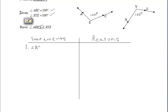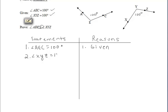The first thing that we know is that angle AEC is 100 degrees. How do we know that? We know that because it was given to us in the given information, so we write "given." The next thing that we know is that angle XYZ is 100 degrees as well — also given.